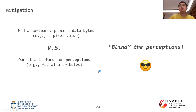Before showing our mitigation scheme, let's first see the difference between the focus of media software and our attack. Generally, media software processes data bytes, for example the pixel value. In contrast, our attack focuses on the perceptions of media data, such as facial attributes. So our intuition is that we can blind the perceptions of media data. Therefore, the functionality of media software will not be affected, and we can hide the perceptions of private media data.